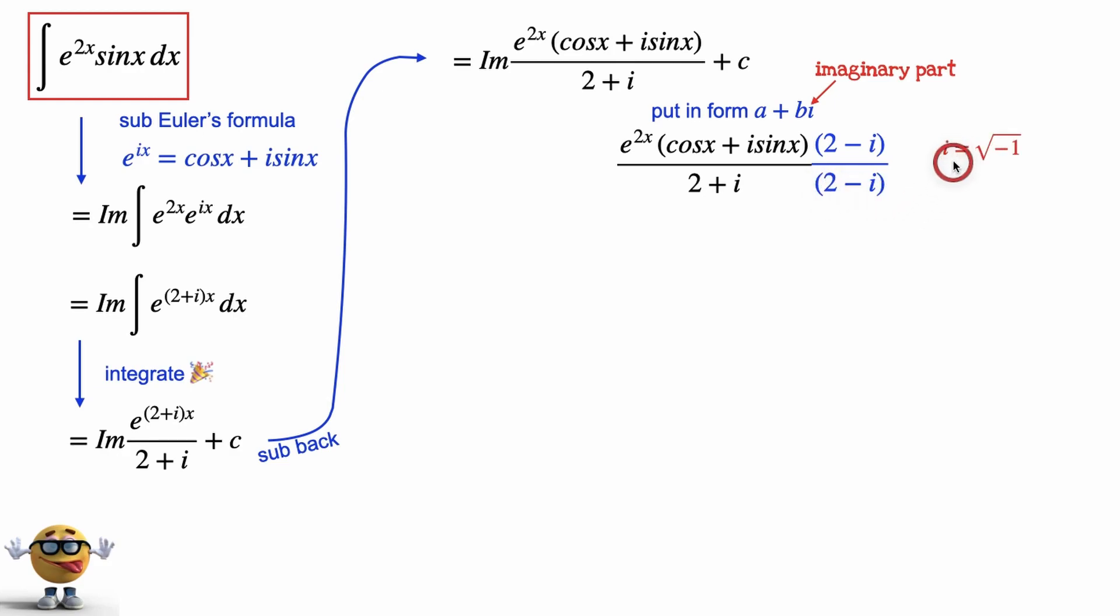Now knowing that i equals the square root of negative 1, and that i squared then is negative 1, if we expand the brackets, kind of foil it out and factor...